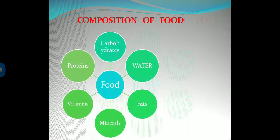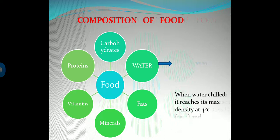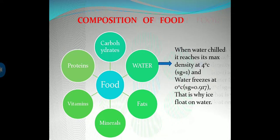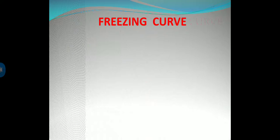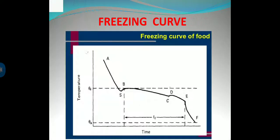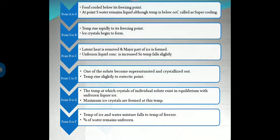The composition of food includes: water, fats, minerals, vitamins, protein, and carbohydrates. Regarding water: when water is chilled it reaches its maximum density at 4°C, and water freezes at 0°C — that is why ice floats on water.